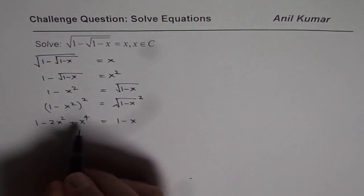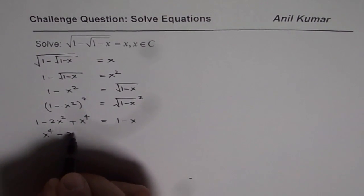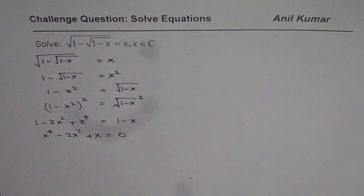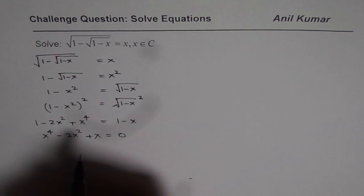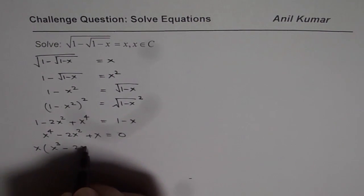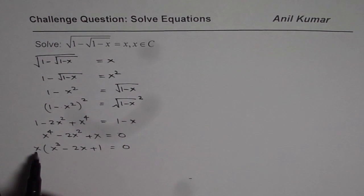Let's bring the terms together and rearrange. So we get x to the power of 4 minus 2x square plus x. 1 minus 1 becomes 0. So we get x to the power of 4 minus 2x square plus x equals 0. Now in this equation we can always factor x. So if you factor x you get x cube minus 2x plus 1 equals 0. Clearly there is one solution which is x equals 0.